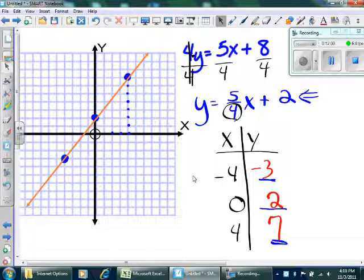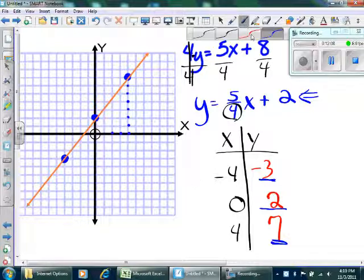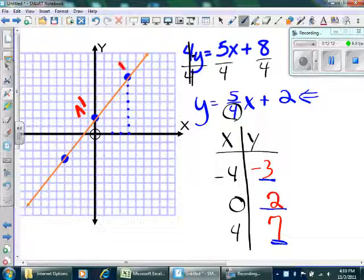Now, wait a minute. I just realized something. What's my slope of this line? Let's count from point A to point B. I'm going to count up 1, 2, 3, 4, 5. My rise number is 5. My run number is 1, 2, 3, 4. So, my slope is 5 over 4.